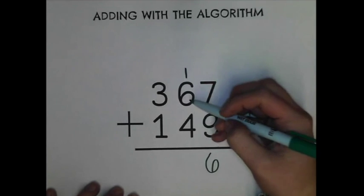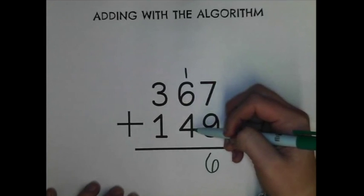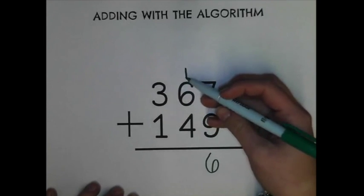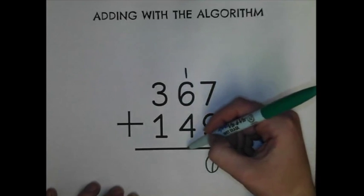Now I have six plus four equals ten plus my extra group of ten to make eleven. And it's the same thing here. I can't put eleven down here.